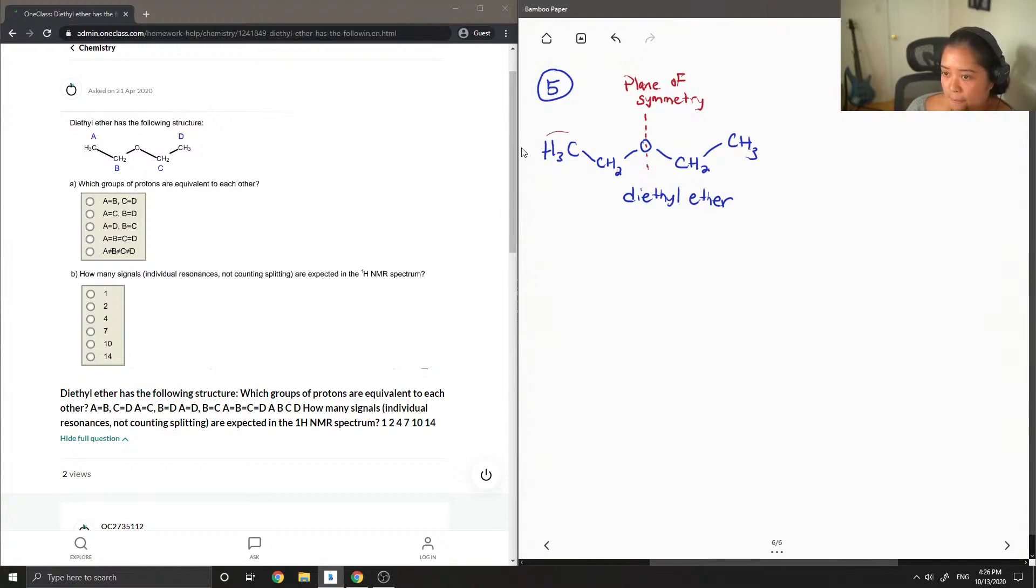So for example, these protons are the same as the ones over here, because the neighbors, which is this CH2 group, is the same. And these protons are similar to each other, they're both connected to an oxygen and they're both connected to another CH3 group. So I'm just going to write that you should look at the neighbors and chemical environment of the protons.